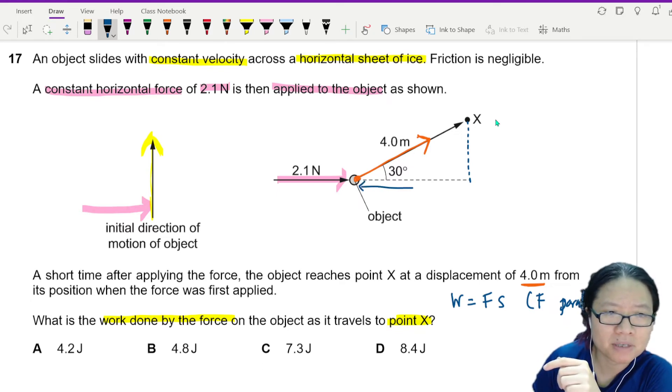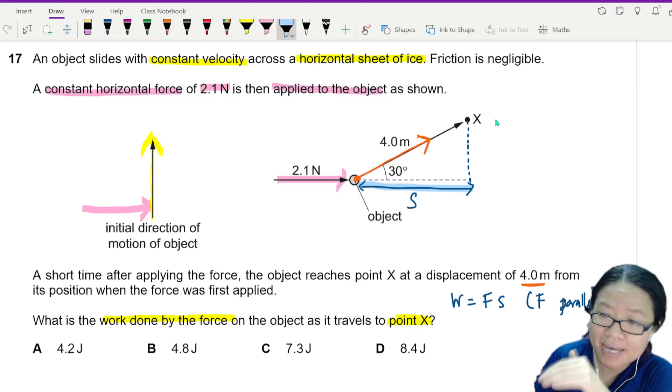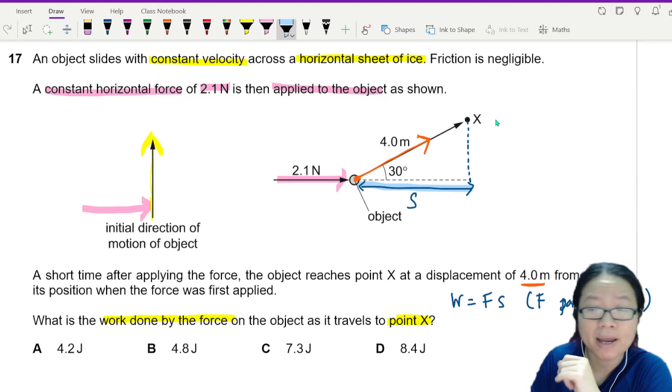So which means I should actually multiply by this distance. Let's say this is my S. So that this two is parallel. The pink color and the blue color is parallel.